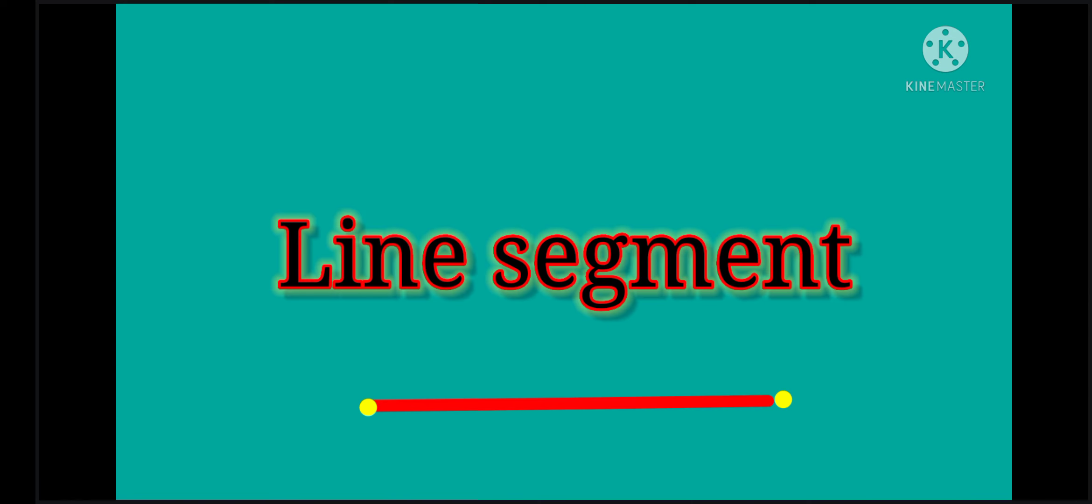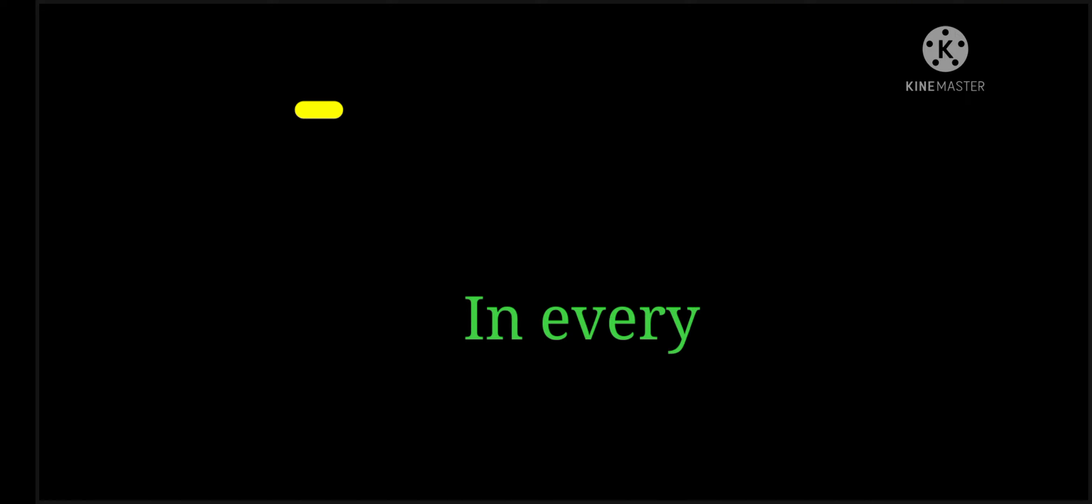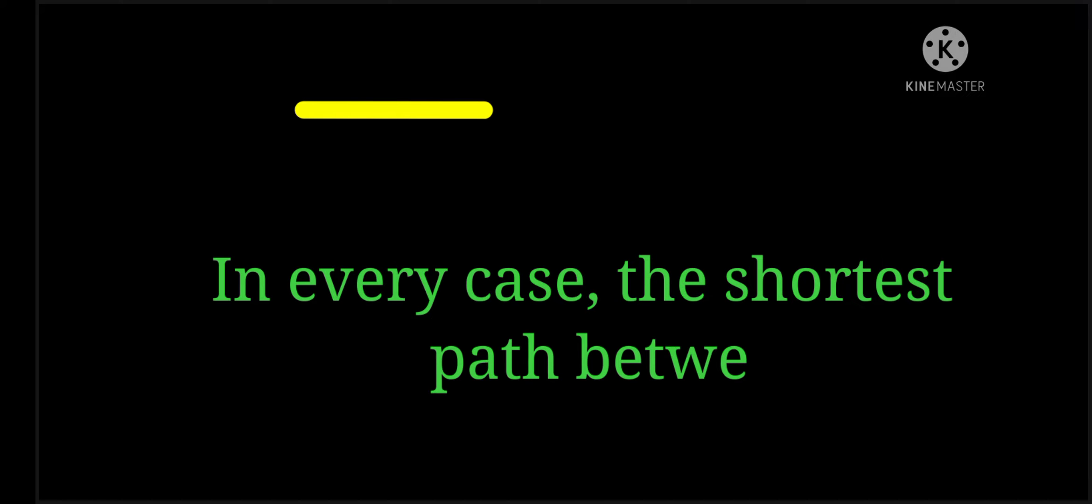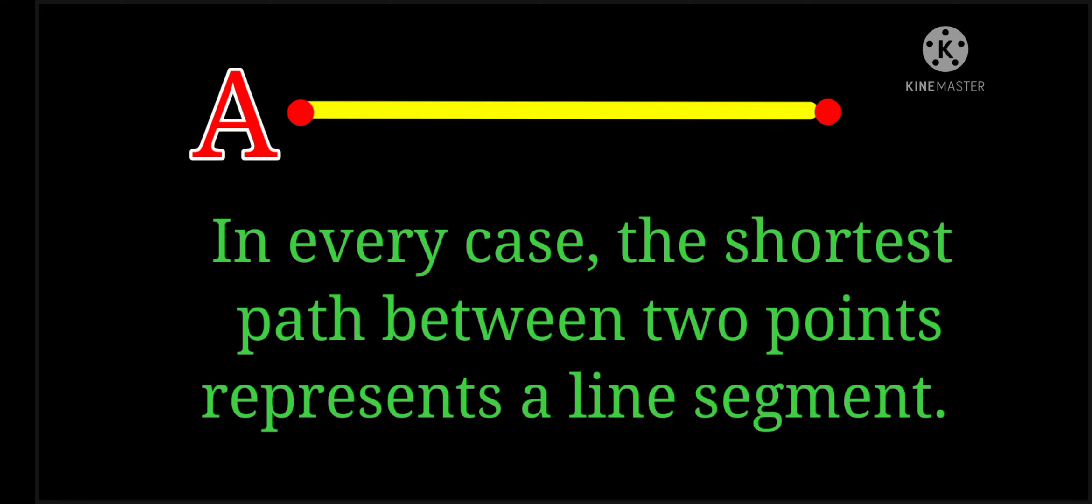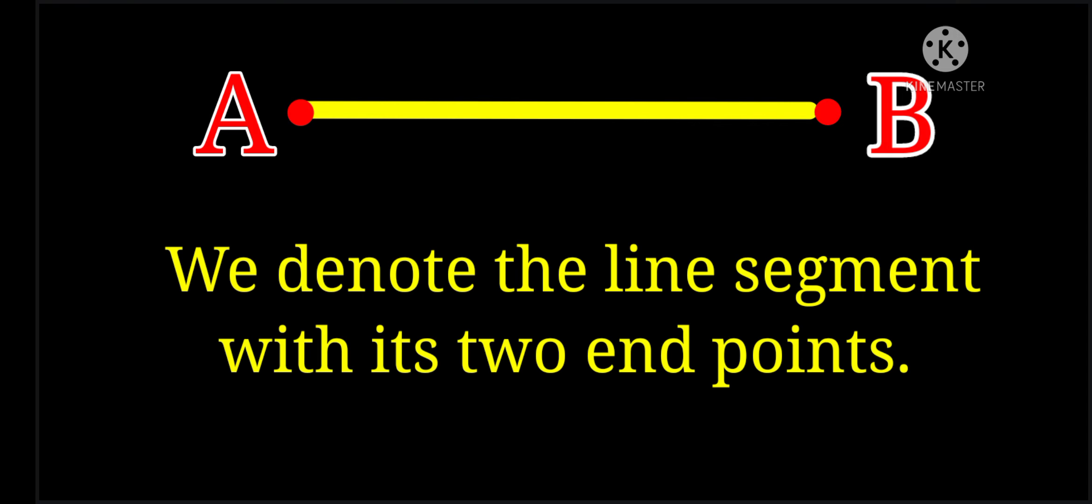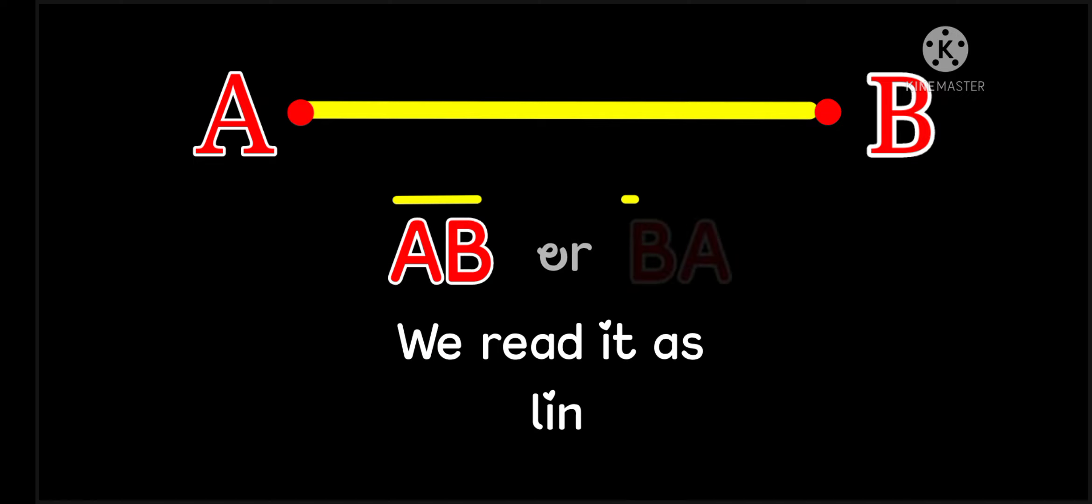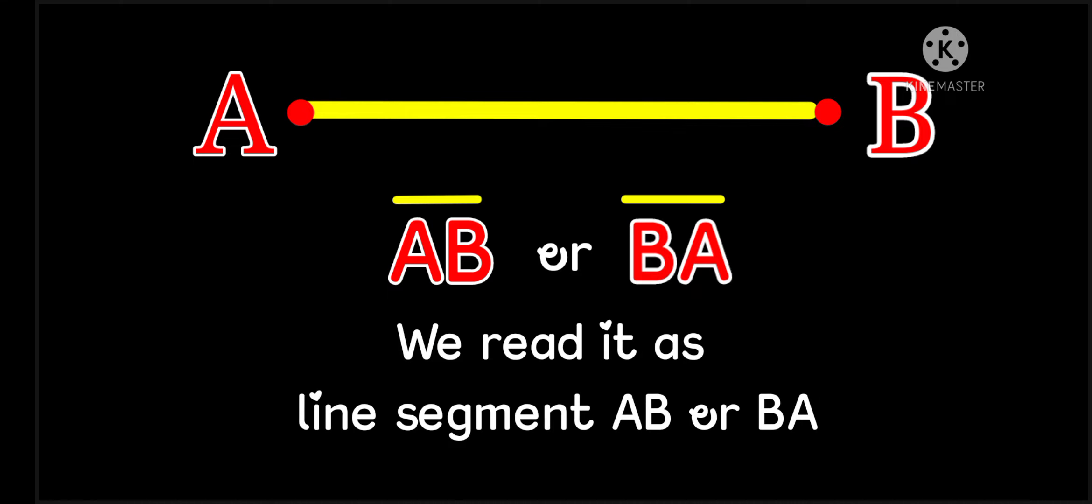Line Segment. In every case, the shortest path between two points represents a line segment. We denote the line segment with its two end points. We read it as line segment A B or B A.